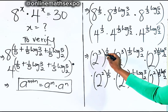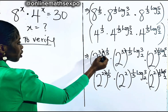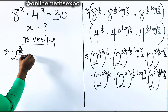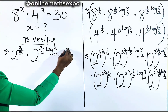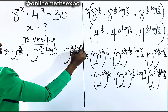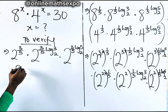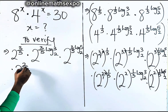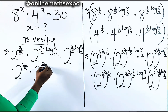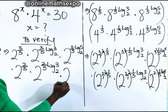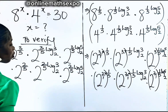Now we open up the brackets and multiply the pairs of exponents. This gives us 2 to the power of 3 fifths, multiplied by 2 to the power of 3 fifths log 3 base 2, multiplied by 2 to the power of 3 fifths log 5 base 2, multiplied by 2 to the power of 2 fifths, multiplied by 2 to the power of 2 fifths log 3 base 2, multiplied by 2 to the power of 2 fifths log 5 base 2.